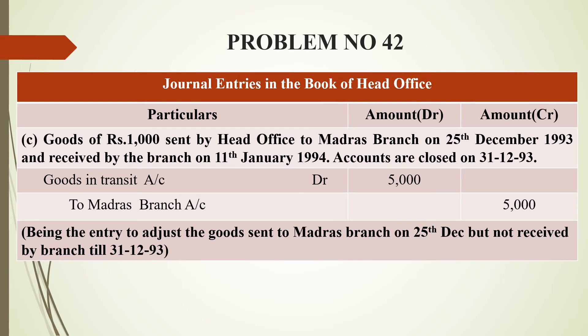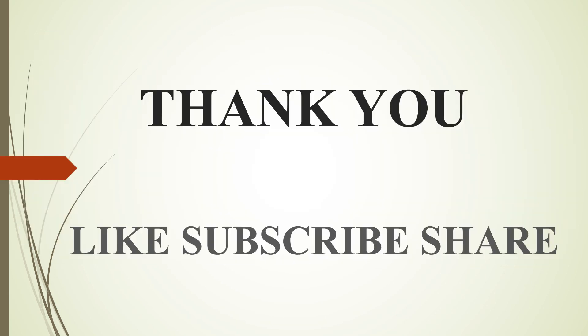Goods in transit account is debited, and Madras branch account is credited because the goods are still outside the business — not yet received by the branch. The narration reads: entry to adjust the goods sent to Madras branch on 25th December but not received by branch till 31st December 1993. You can write the narration in your own words.